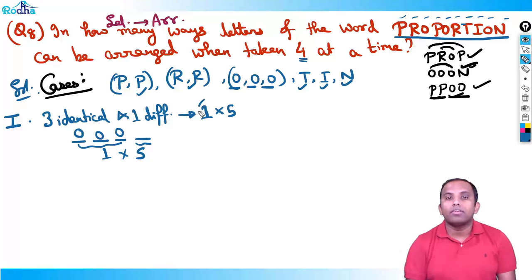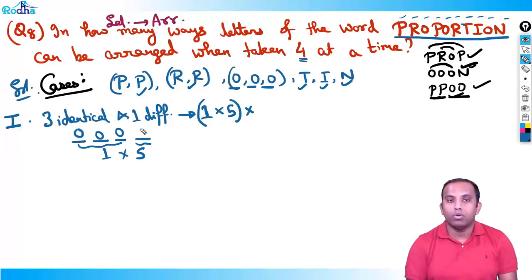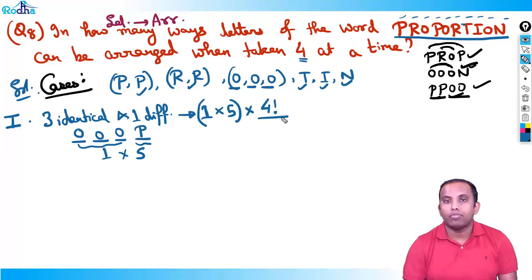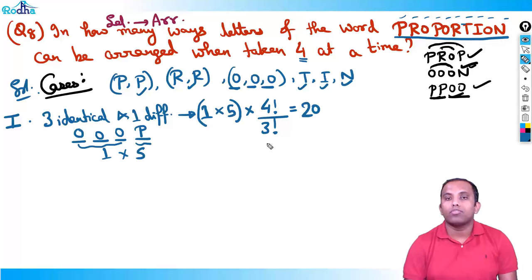All five groups are similar — three letters same and one different, like O-O-O-P, O-O-O-R, O-O-O-T, O-O-O-I, O-O-O-N. Arrangement for each group: four factorial divided by three factorial — since O repeats three times. That gives 24 ÷ 6 = 4. Four times five groups = 20. So the answer for case one is 20.